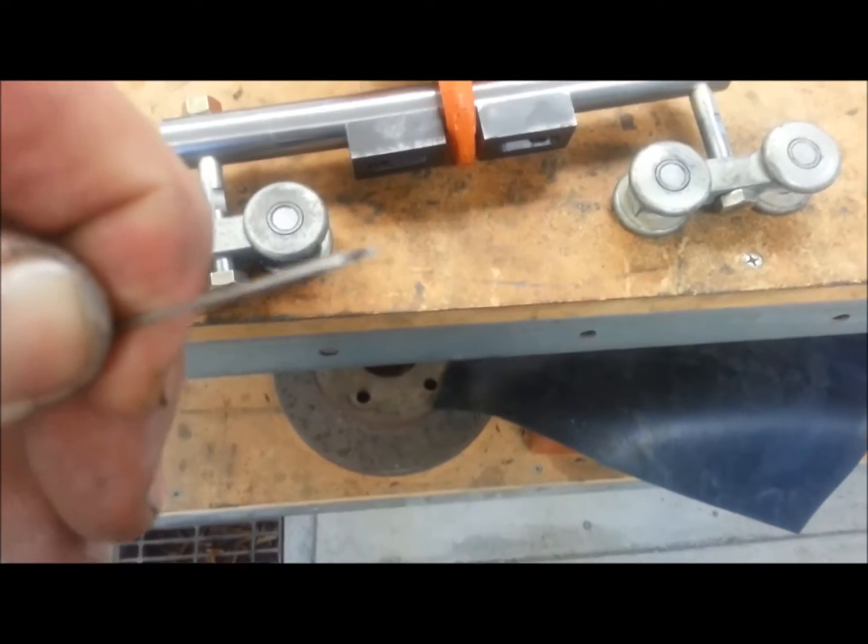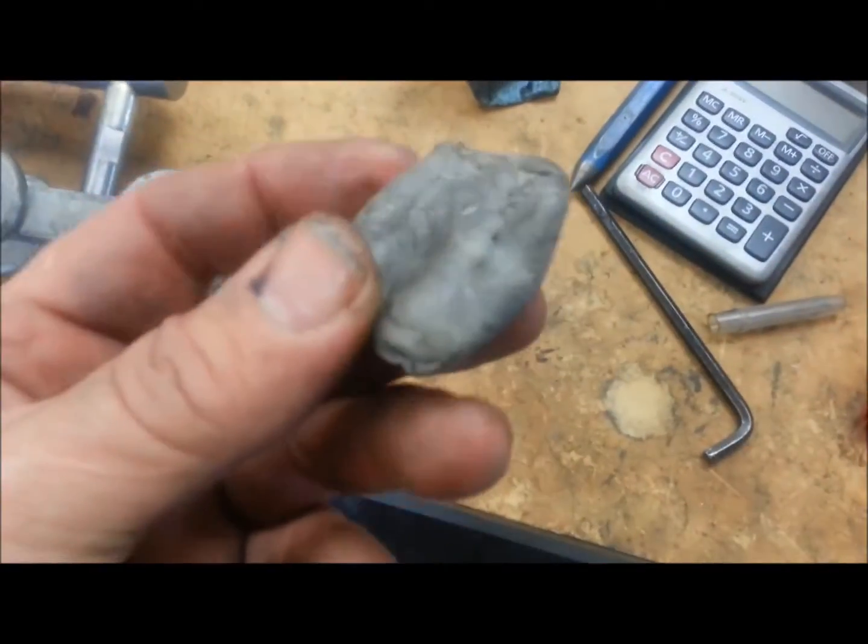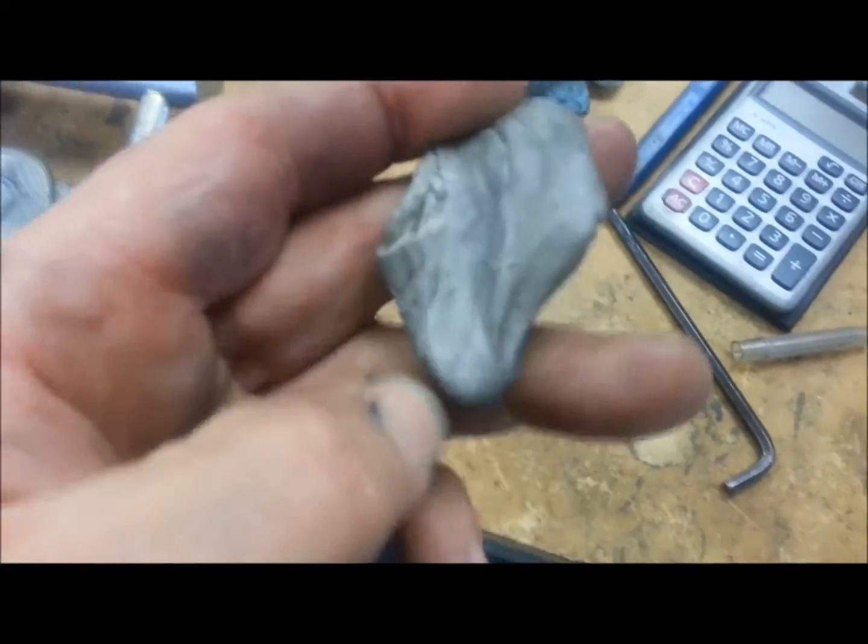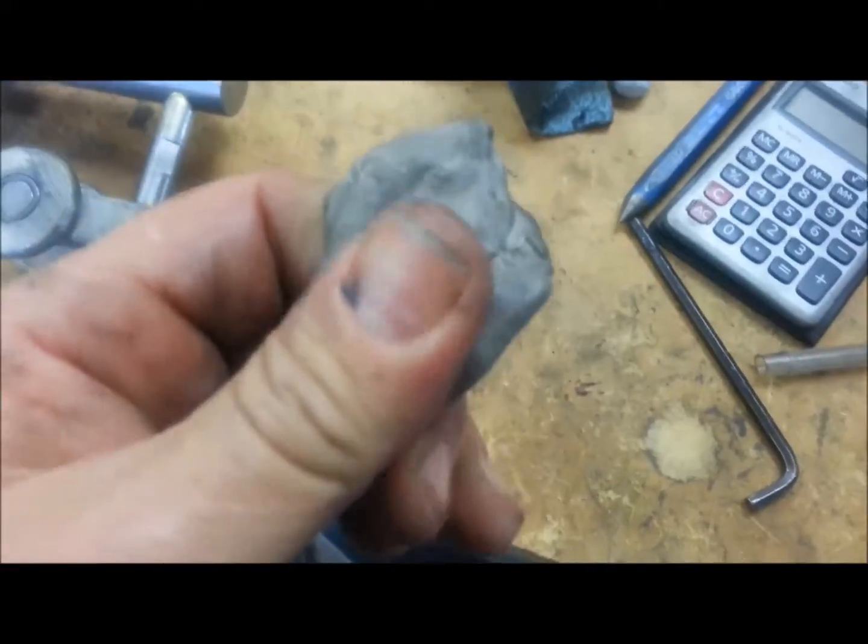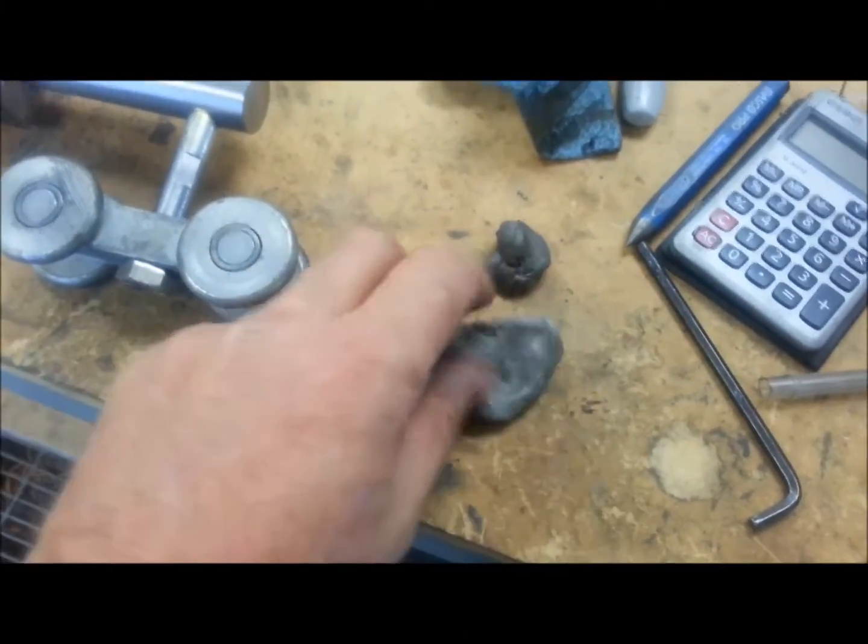You can see that end is cut at an angle. You're also going to need this rubber mastic. They use this for sealing ductwork and it's a non-hardening, almost like a silly putty.